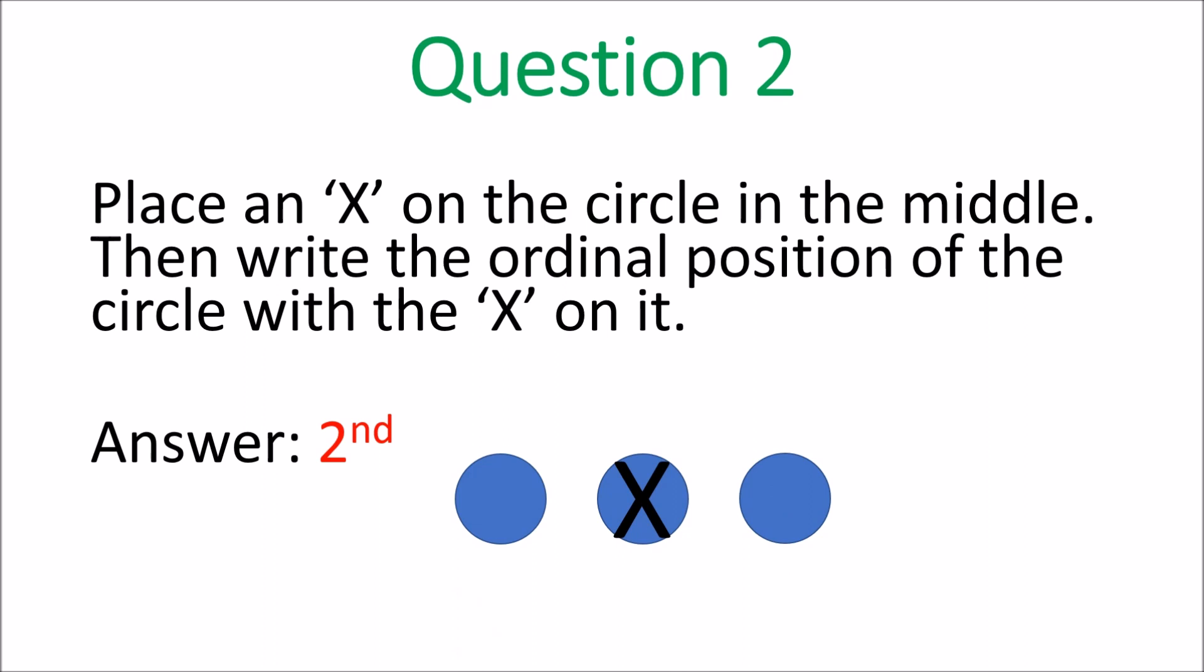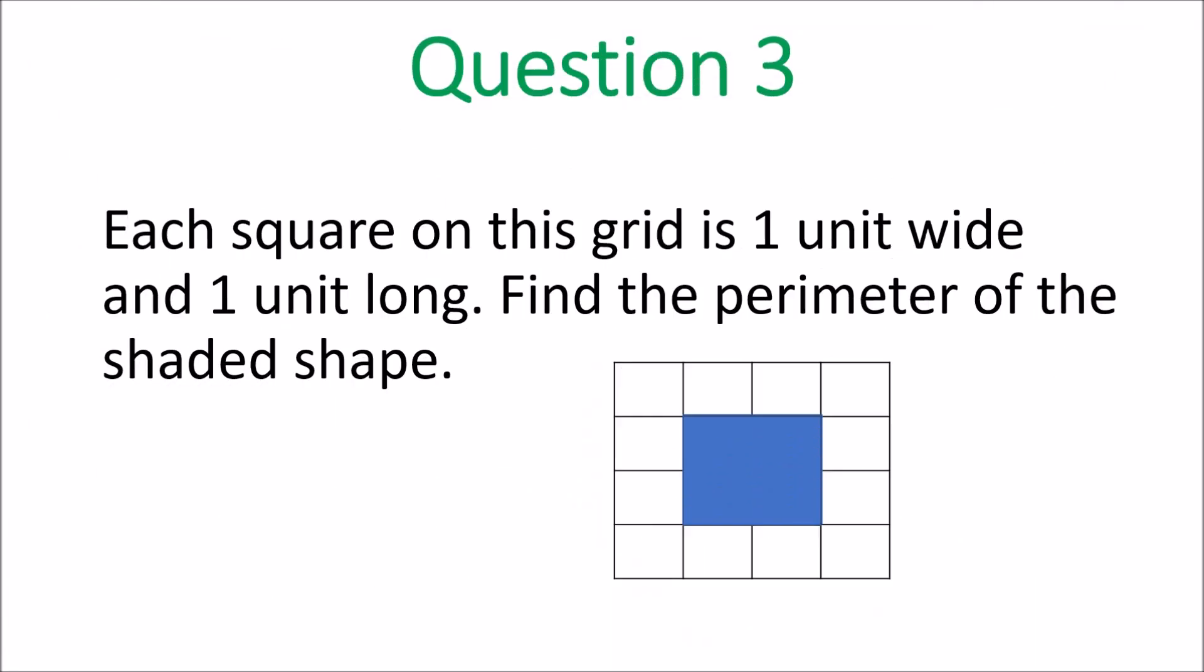And we move on to question 2. Place an X on the circle in the middle. Then write the ordinal position of the circle with the X on it. And that circle would be in the second position. You have to write second 2 with nd at the top, or they spell the word second s-e-c-o-n-d. Ensure they know ordinals and why you put the letters at the top. First would be st, second nd, third rd.